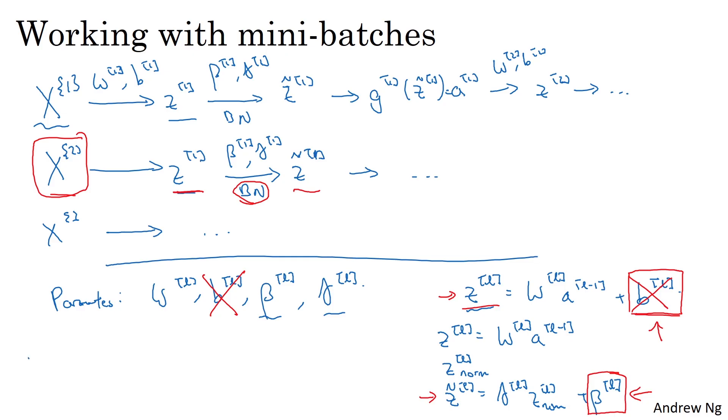Finally, remember that the dimension of zl, because if you're doing this on one example, is going to be nl by one. And so bl had dimension nl by one, if nl is the number of hidden units in layer l. And so the dimension of beta l and gamma l is also going to be nl by one. Because that's the number of hidden units you have, you have nl hidden units. And so beta l and gamma l are used to scale the mean and variance of each of the hidden units to whatever the network wants to set them to.